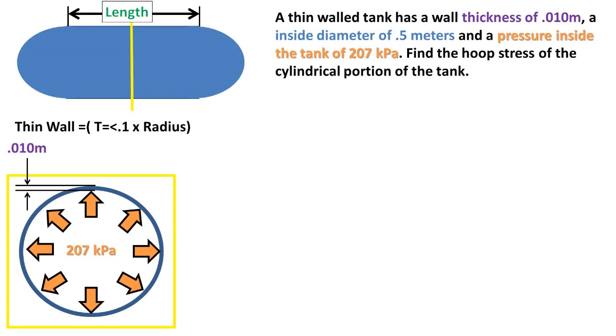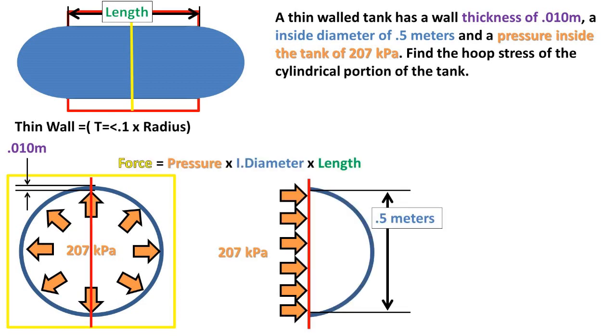Inside the pressure vessel, we have a pressure pushing out as shown in the diagram. We really are only interested in the pressure that is acting 90 degrees perpendicular to the cross-sectional plane.